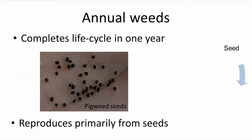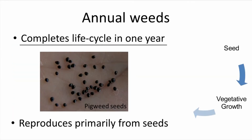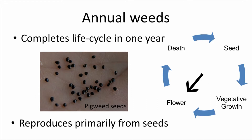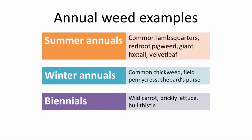Annual weeds complete a whole life cycle in one year. They commonly reproduce by seed. Each season they germinate, grow vegetatively — meaning leaves, stems, and roots — reproduce, and then die. With annual weeds, we have three subcategories, again based on the life cycle of the plant.